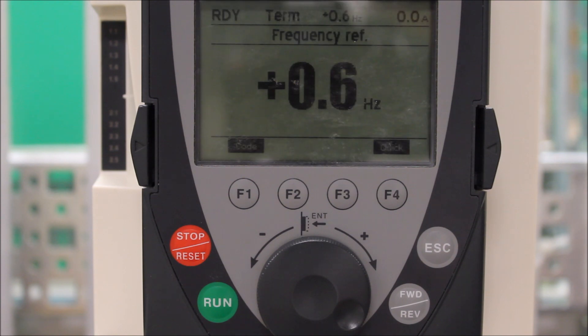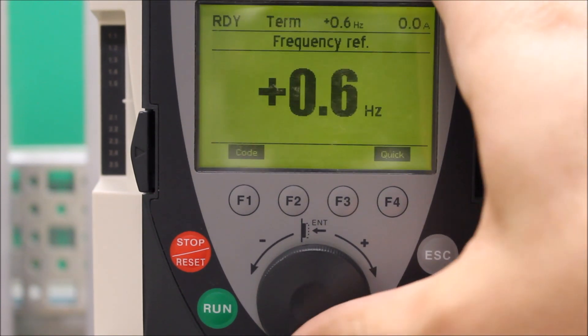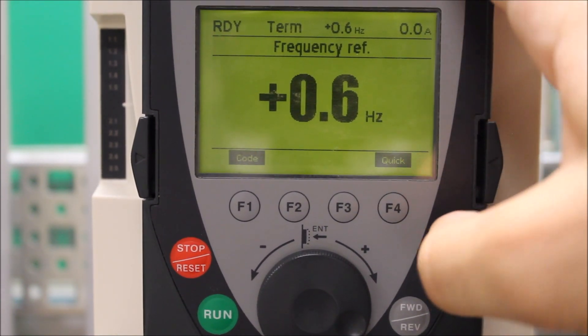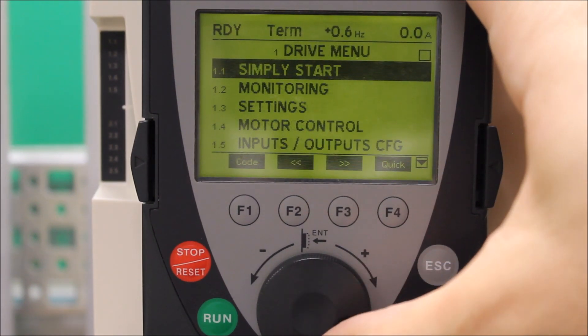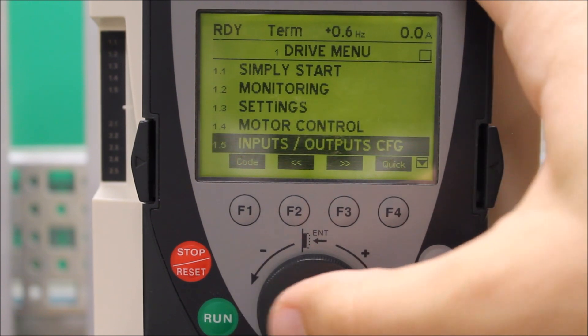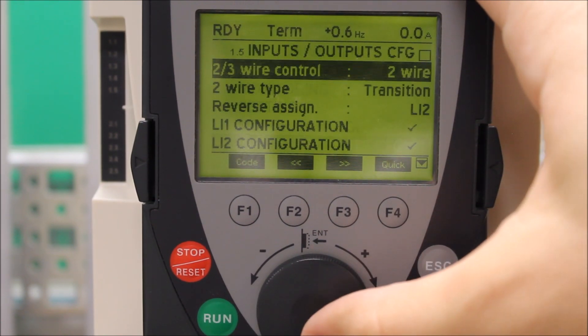Let's talk about how to program this. From your main menu, escape back to your main menu if not already there, and go to drive menu. Go down to 1.5, inputs and outputs configuration.